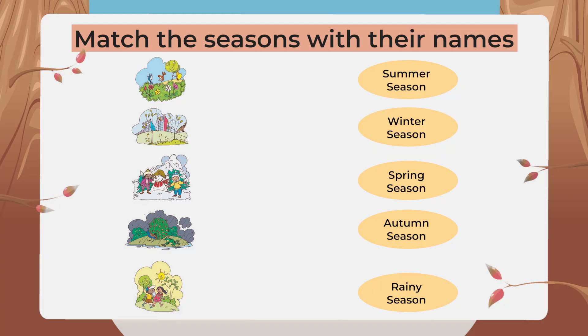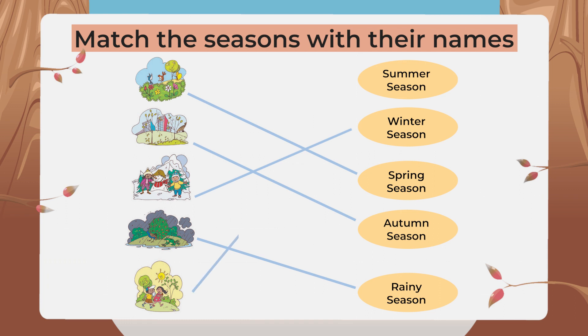In this chapter we learned that there are five seasons. Now recognize the pictures of those seasons and match them with their names. The first picture is from the spring season, the second from autumn, the third from winter, the fourth from the rainy season, and the fifth from the summer season.